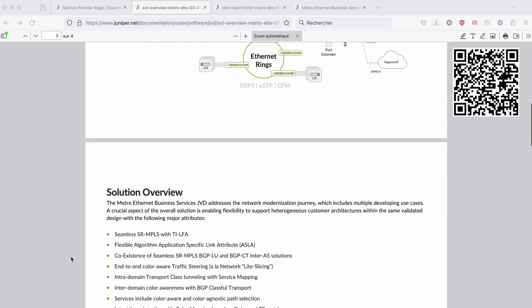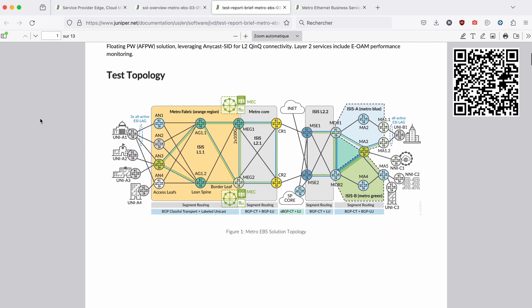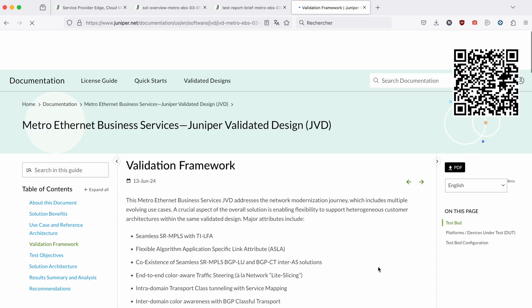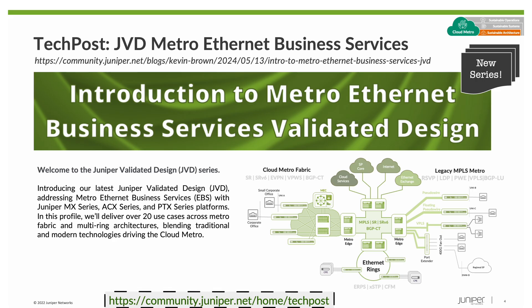On the Design Center you'll find three document types. The Solution Overview provides a one to two page explanation of the JVD. The Test Report Brief summarizes the results of the validation, and the JVD document provides a deeper dive into the solution architecture. We also have a GitHub repository where you can find the configurations for all the validated solutions. You can also head over to TechPost for a new blog series which will dissect the featured Metro JVD. In this series I'll provide an in-depth breakdown of the solution architecture and then build the JVD step by step. The first blog is posted now so stay tuned for more.